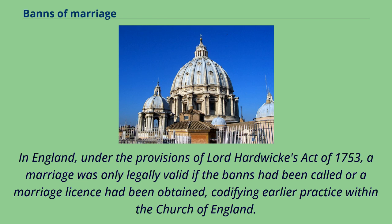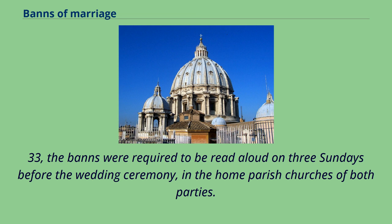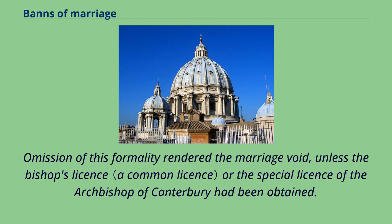In England, under the provisions of Lord Hardwick's Act of 1753, a marriage was only legally valid if the banns had been called or a marriage license had been obtained, codifying earlier practice within the Church of England. By this statute, 26 G.II c.33, the banns were required to be read aloud on three Sundays before the wedding ceremony, in the home parish churches of both parties. An omission of this formality rendered the marriage void, unless the bishop's license or the special license of the Archbishop of Canterbury had been obtained.